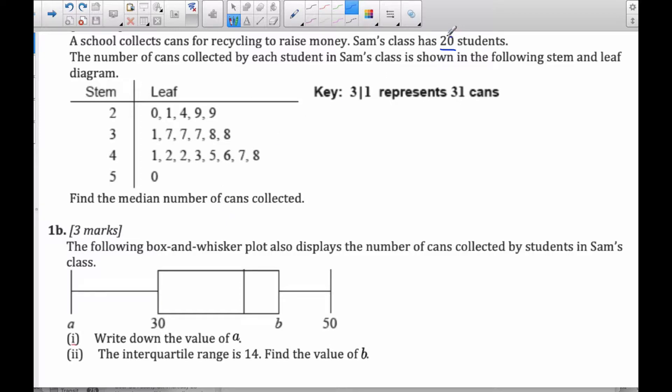Okay, so the first question is asking us to find the median number of cans collected. Well, if I know there are 20 students in total, that's n, so n is 20. So to find the median, I go n plus 1, I divide by 2, which will be 21 divided by 2, which is going to be the 10.5th position.